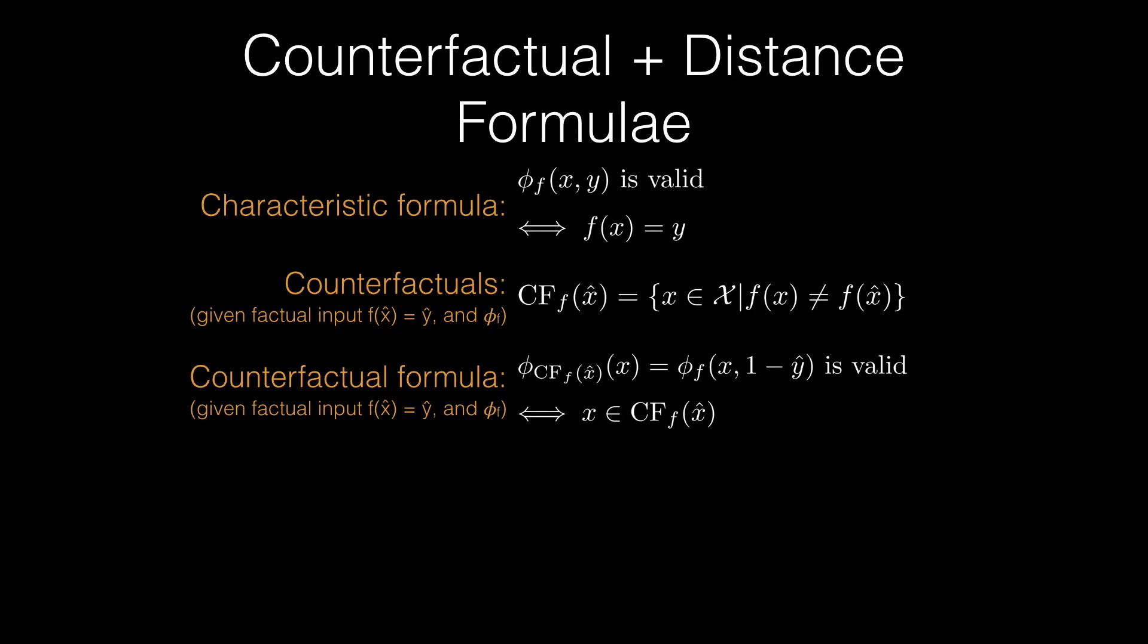The counterfactual formula is simply the characteristic formula where the desired label is an argument. In the binary case, we want to find the x's such that the characteristic formula of F with inputs x and 1 minus ŷ is valid.